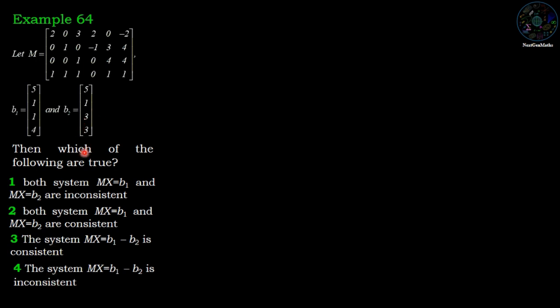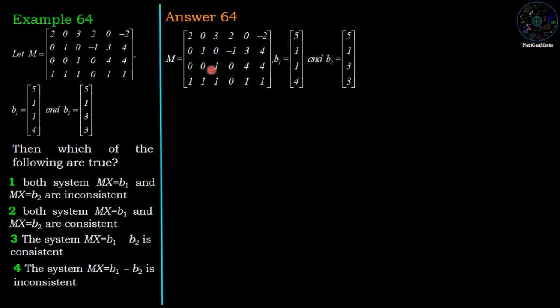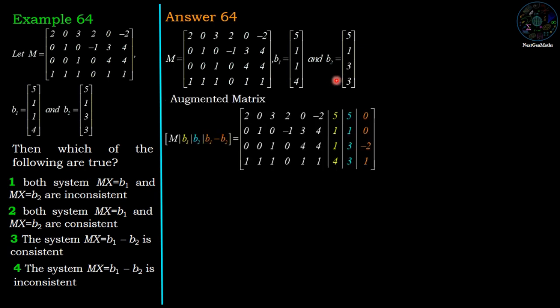This is one of the easiest problems of NET exam December 2018. We have given matrix M, B1 and B2, so first we augment matrix M with B1, B2, and B1 minus B2.